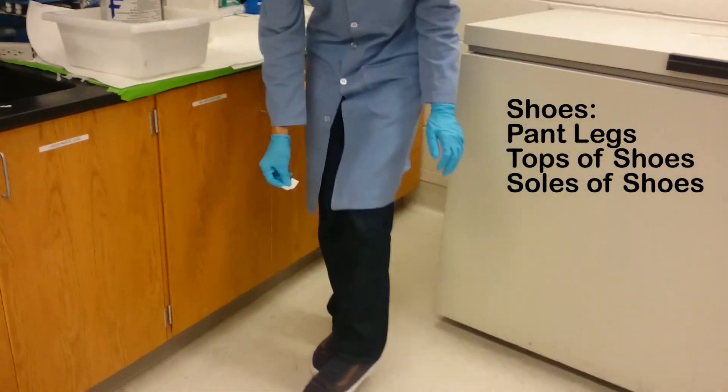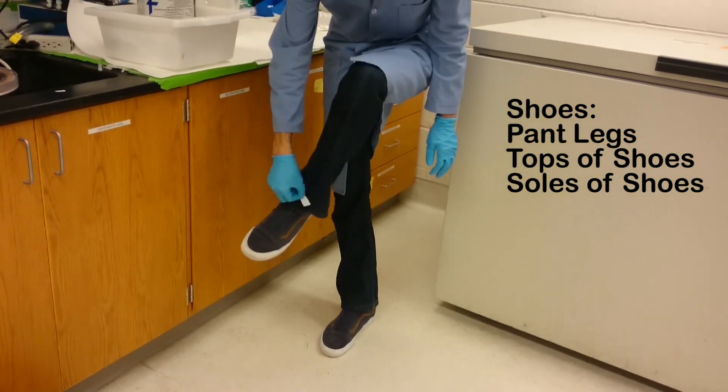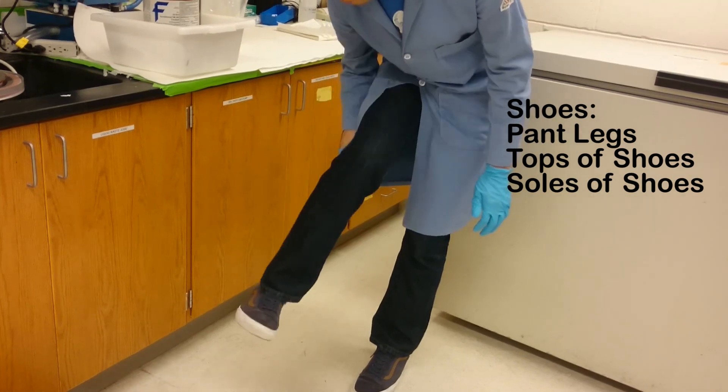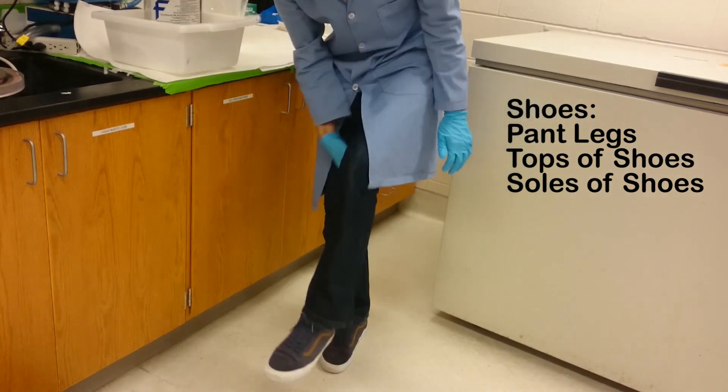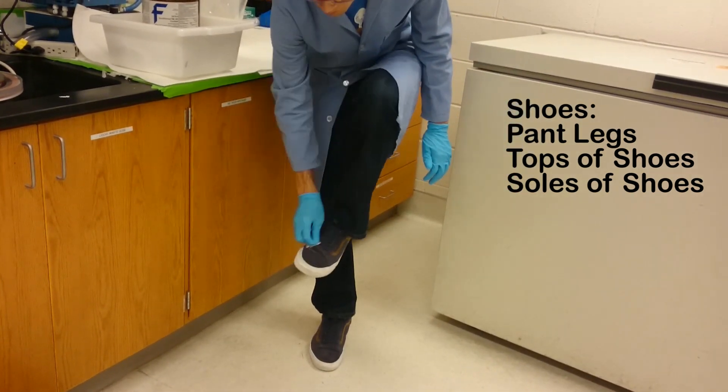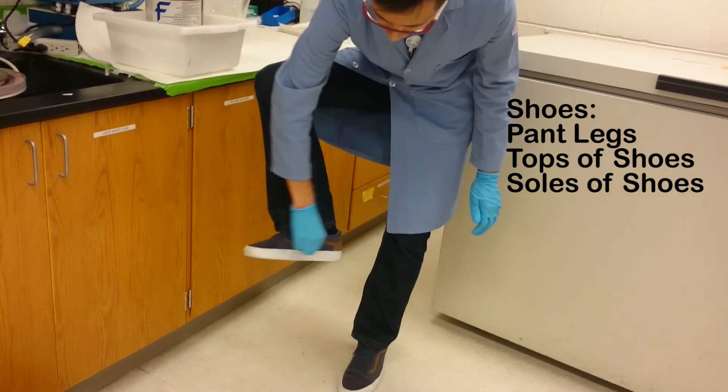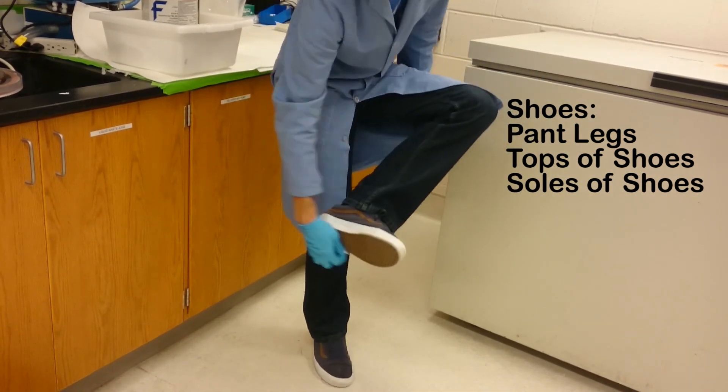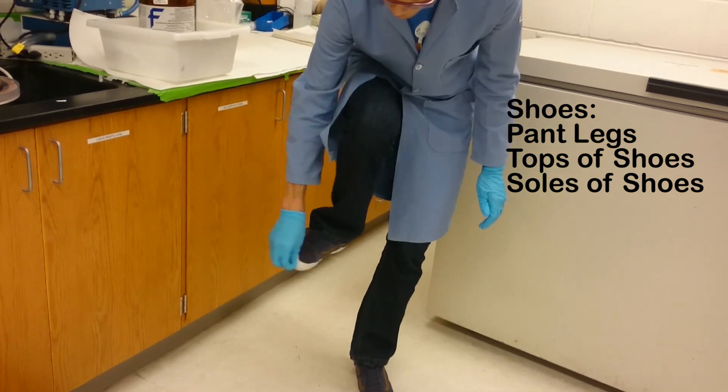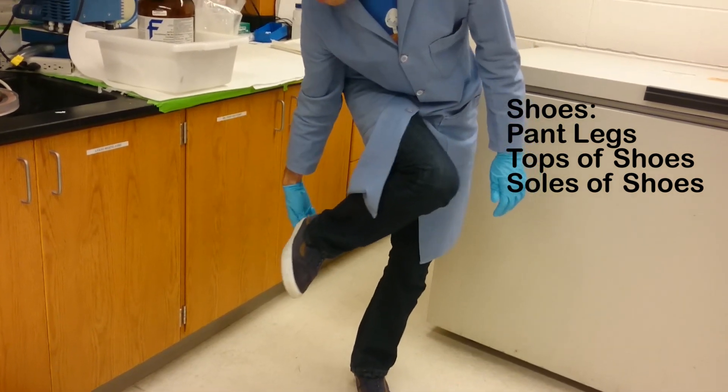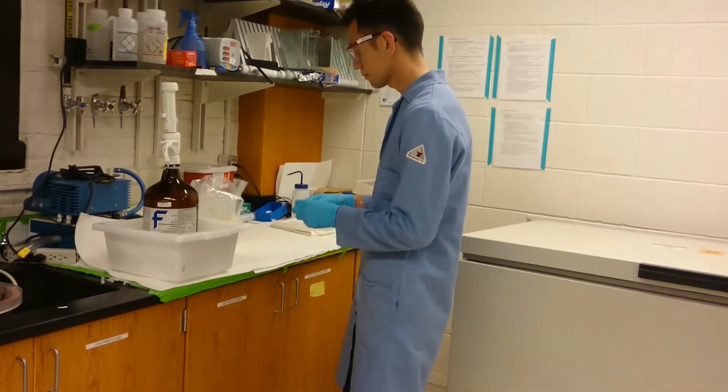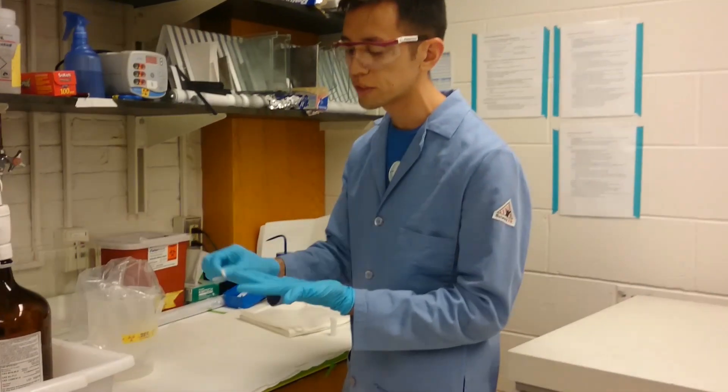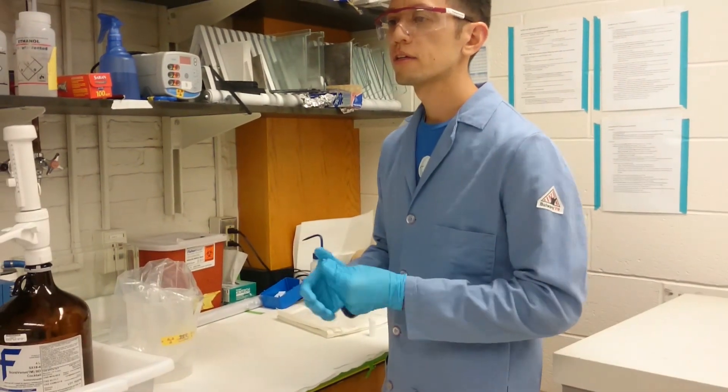Now I'm going to swipe my pants - the front of my pant legs, the back of my pant legs, the tops of my shoes, as well as the sole of my shoes. At this point you can also do your gloves. You want to check your fingers, as well as the palms.